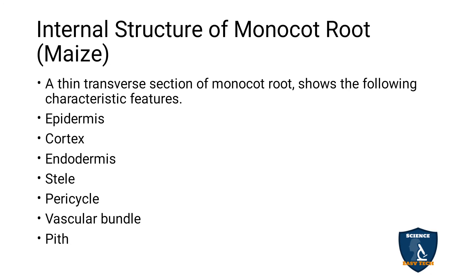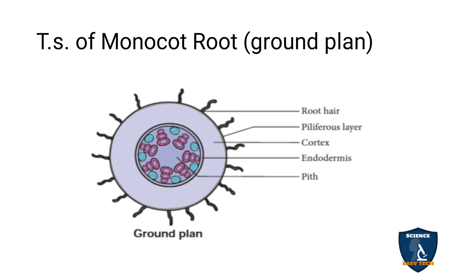Now we will see the monocot root. While taking the cross section, you will get epidermis, cortex, endodermis, stele, pericycle, vascular bundle, and pith — the same structures as in dicot root. The ground plan shows root hair, piliferous layer, cortex, endodermis, and pith. The only difference is in the stele portion.